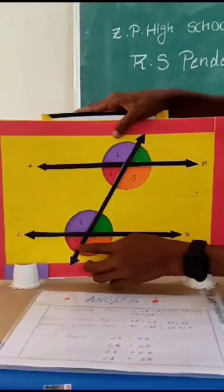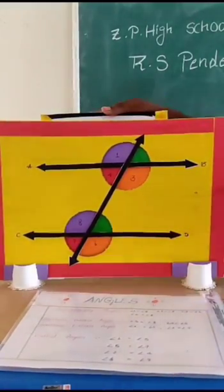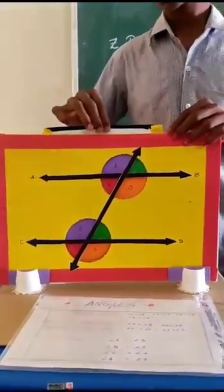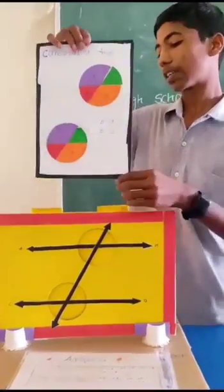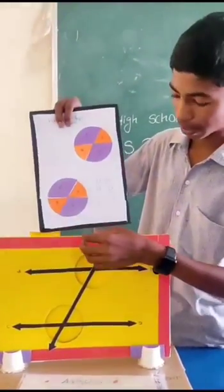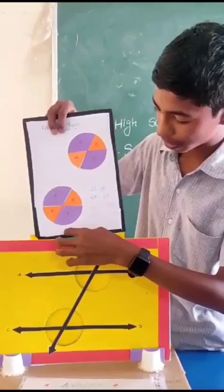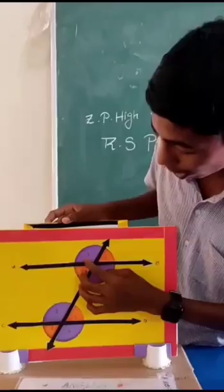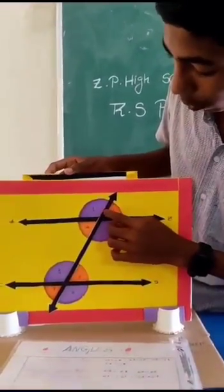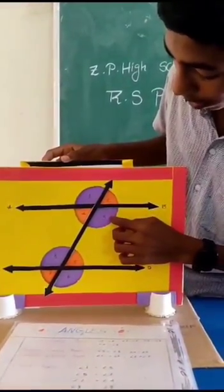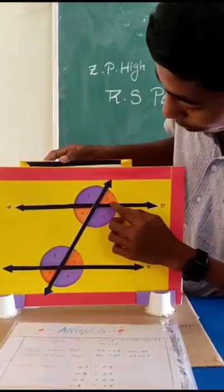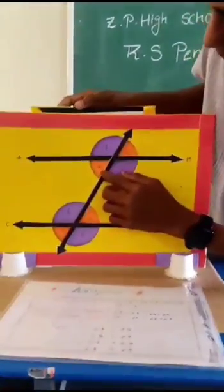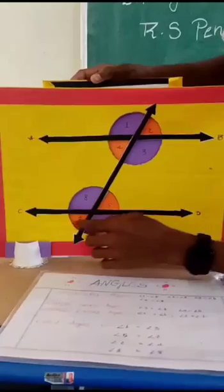Now I am turning this card and fixing it in this model. It shows vertically opposite angles: angle 1 and angle 3 are equal, and also angle 2 and angle 4, angle 5 and angle 7, angle 6 and angle 8. These are called vertically opposite angles.